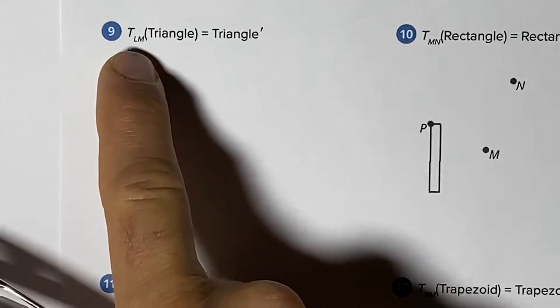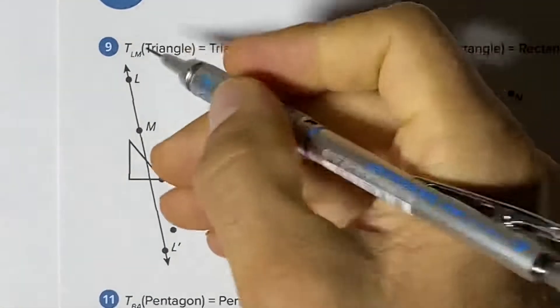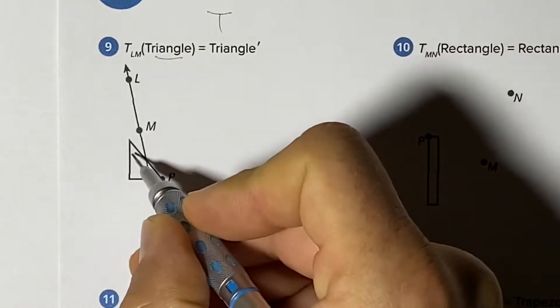We have a translation function which tells us what we're going to be doing. We're going to be translating a triangle, this triangle here.